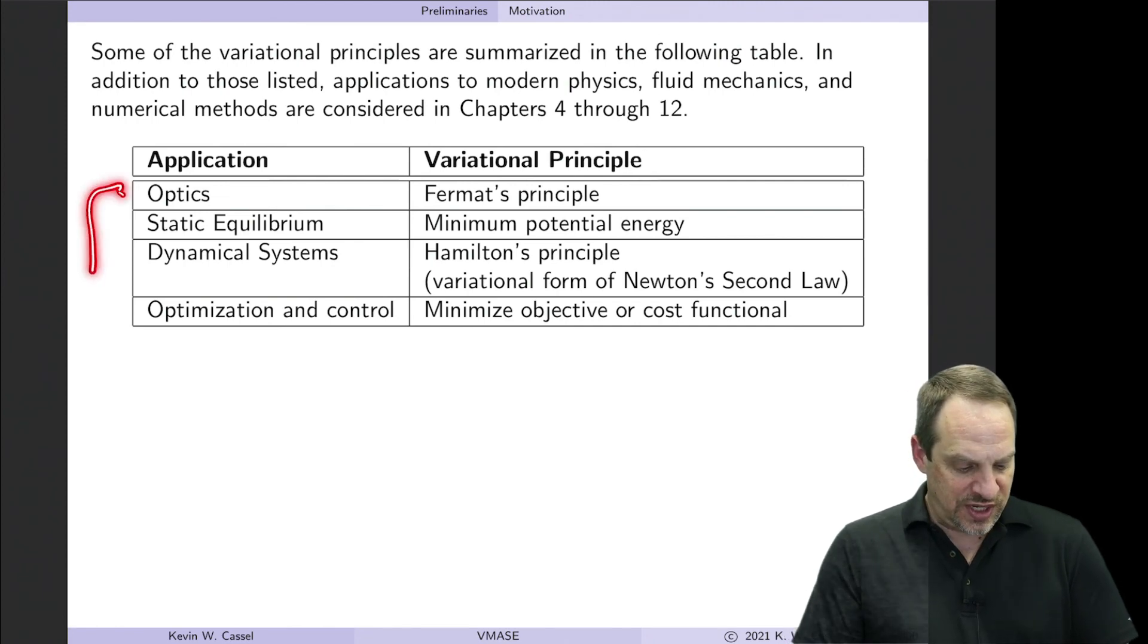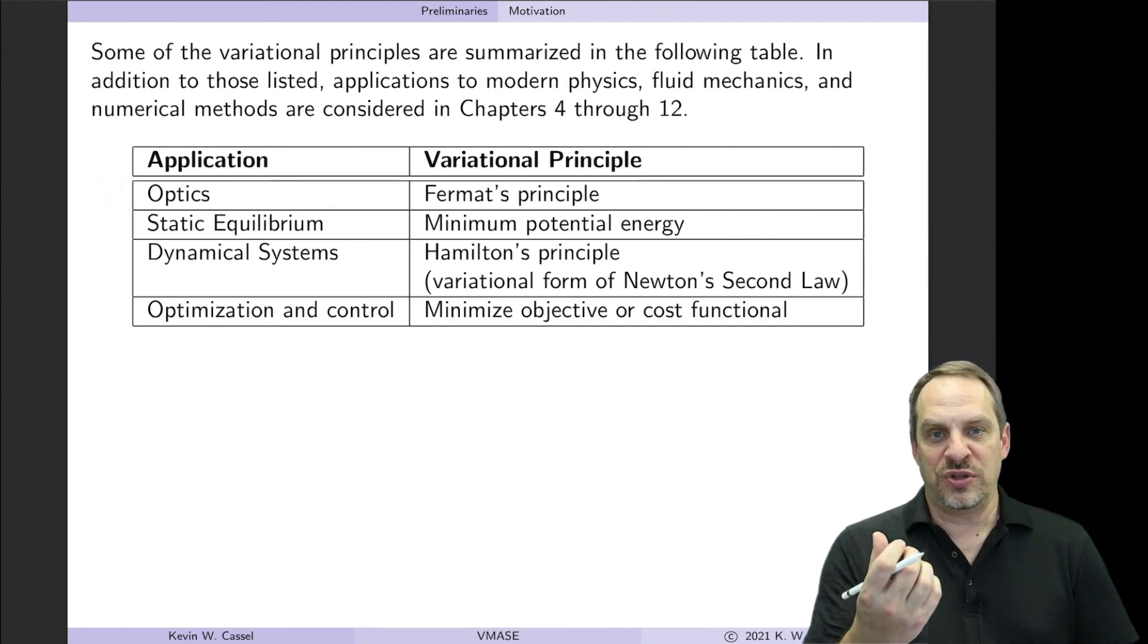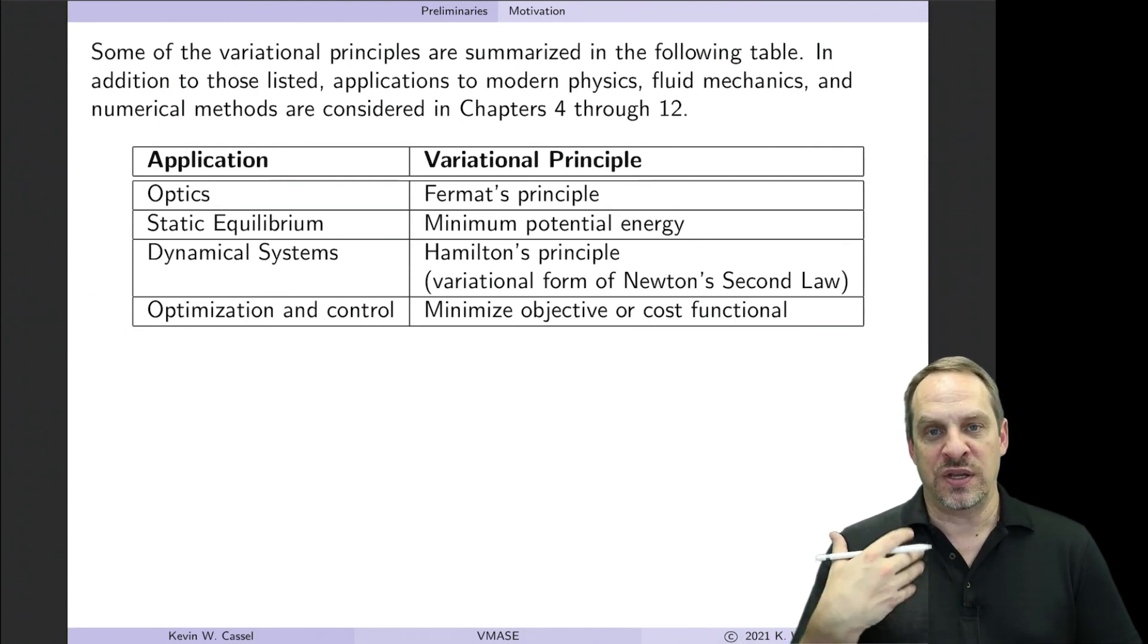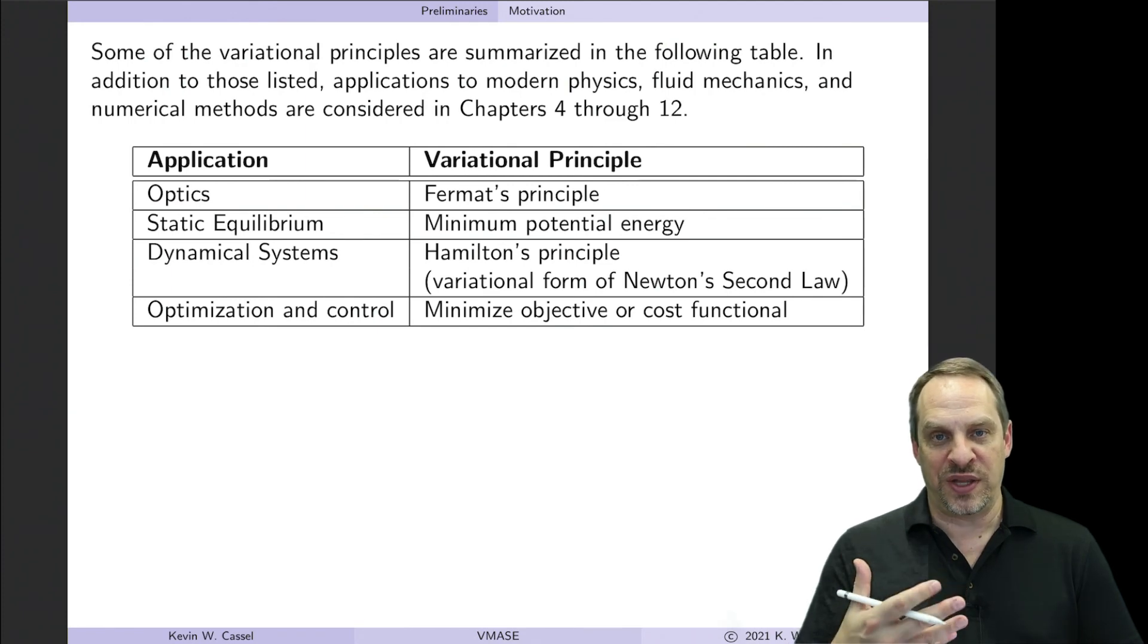So in these cases, the physical principle determines the functional, whereas in optimization control, we design the cost functional or objective functional in a way that accomplishes our purposes and our goals.